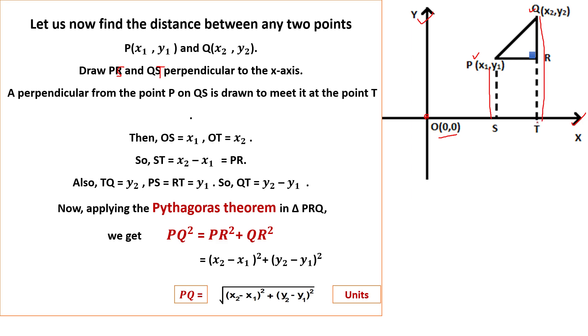So a perpendicular from the point P on QS is drawn to meet it at the point T.